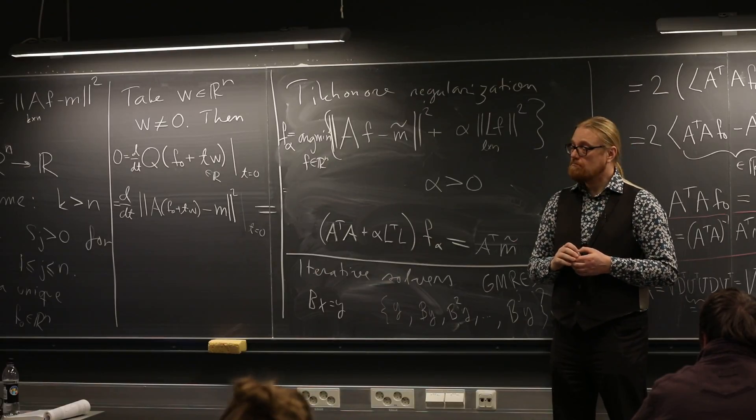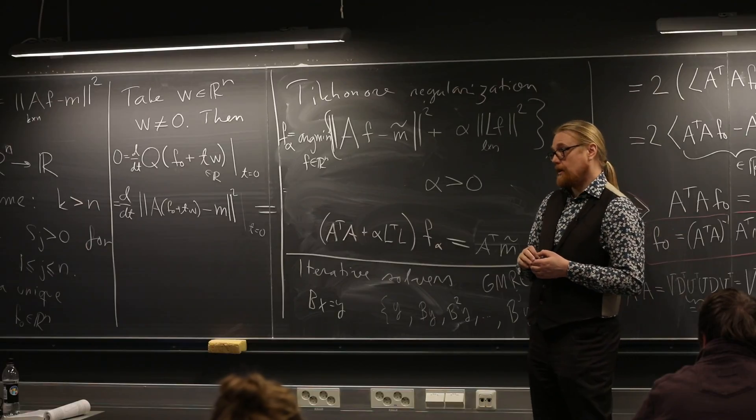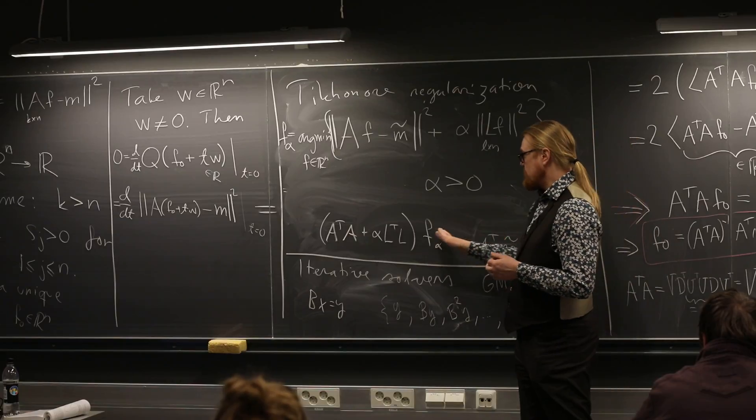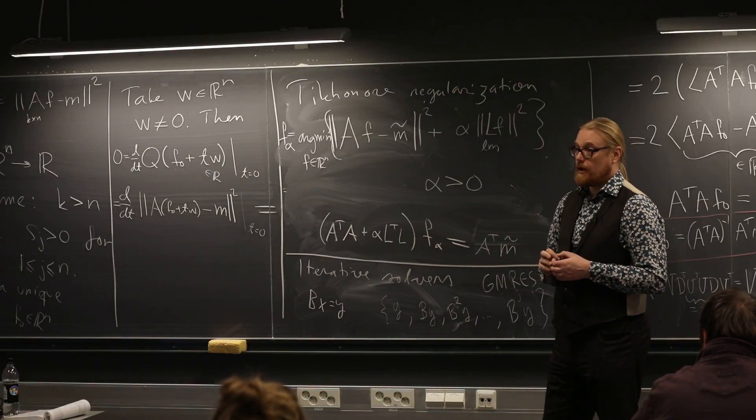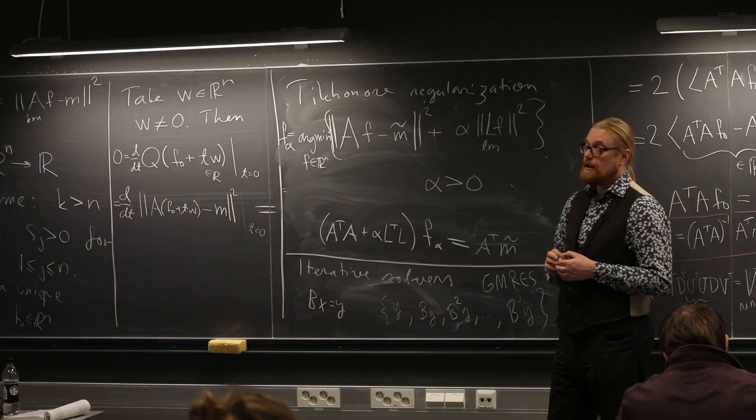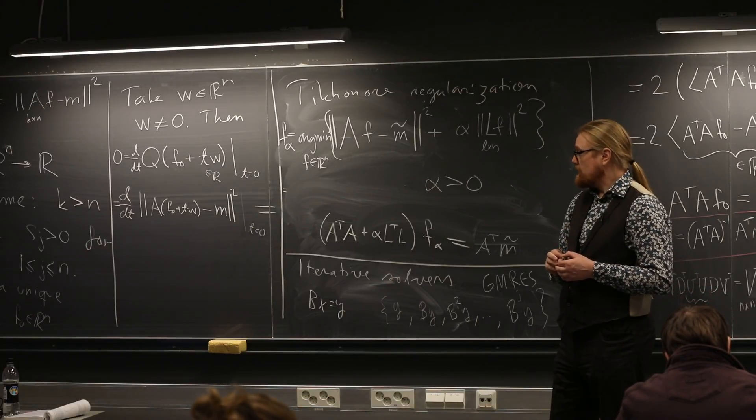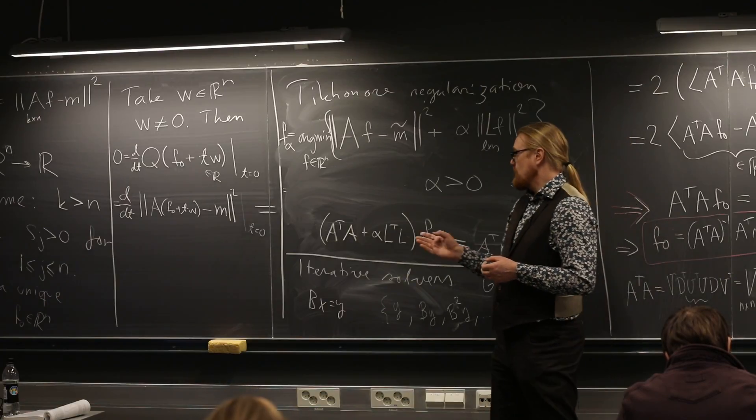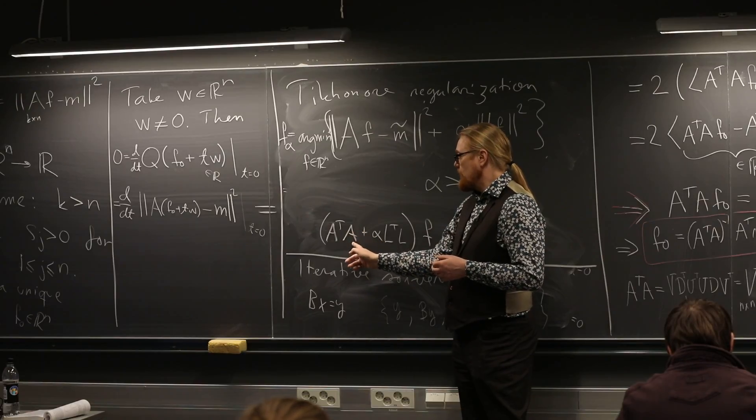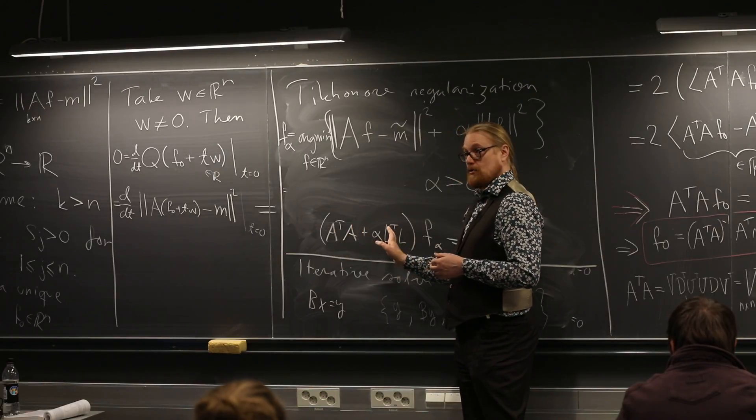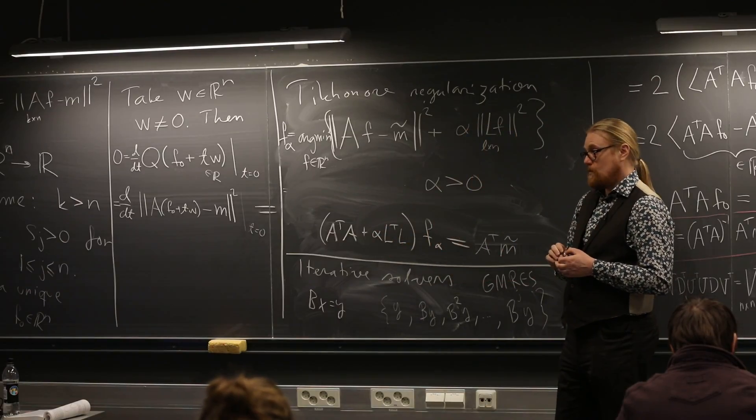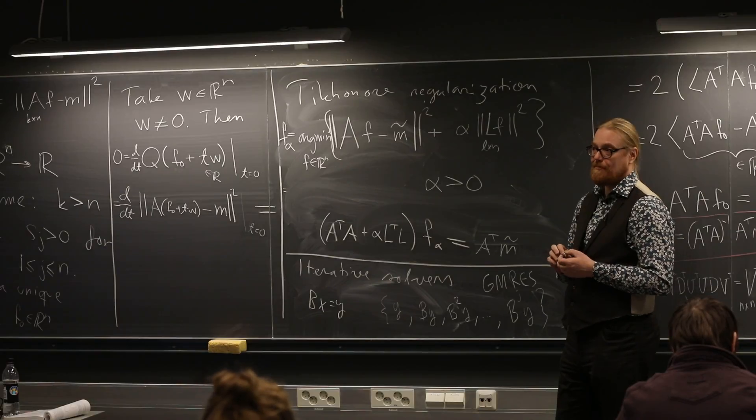So we will look at conjugate gradients. Conjugate gradients is, for example, that's something we will use for this equation, we will apply the conjugate gradient method. Because that's somehow the iterative gradient method. Yeah, that's true. So we just need a computer code for A and A transpose, and L and L transpose, and then we are good to go. We will be doing something like that later.